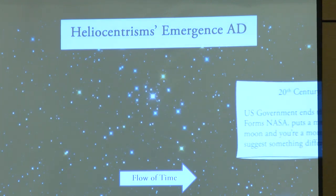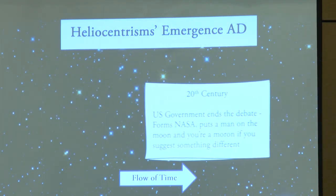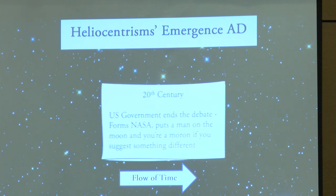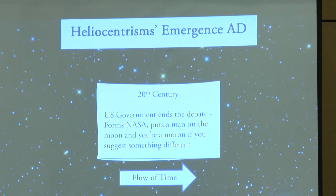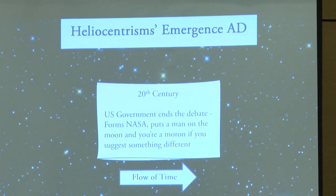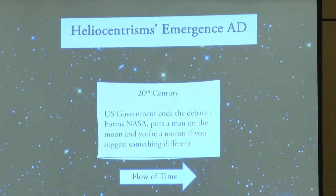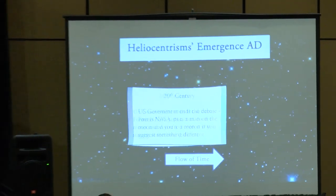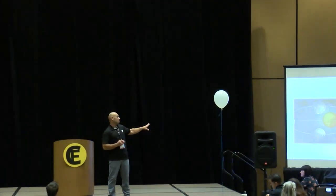By the 17th and 18th century, it's in our school systems by the Jesuits. Jesuits put these into the school systems, start pumping out these things — you're an idiot, you're a moron if you even considered it back then. By the time you get to the 19th century, there was only a small amount of Bible-believing Christians who feared would protest this or still remain flat geocentric. And then, of course, we get to today — the US government ended the debate and put a man on the moon, showed us pictures. Okay guys, we can all go home now.